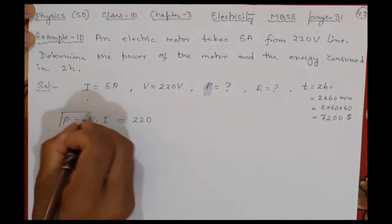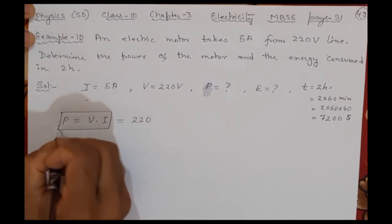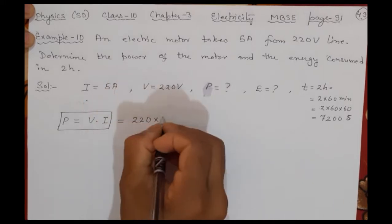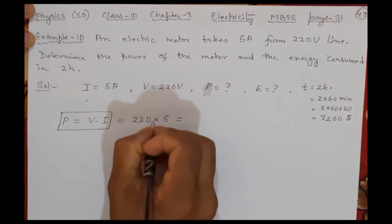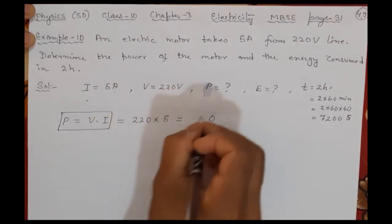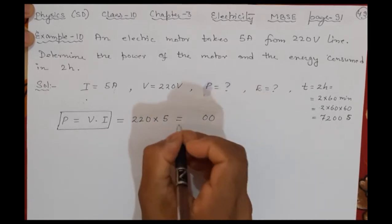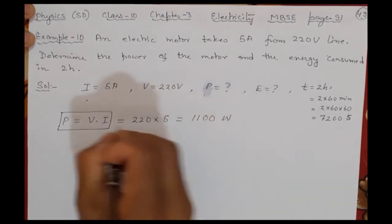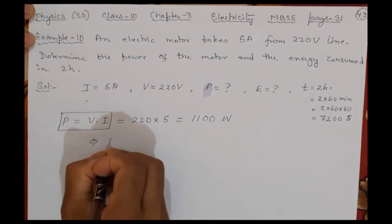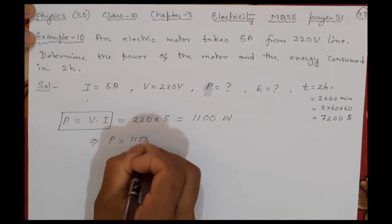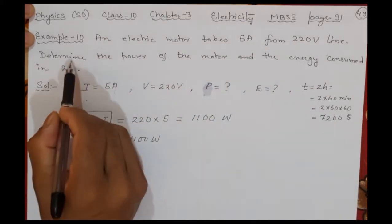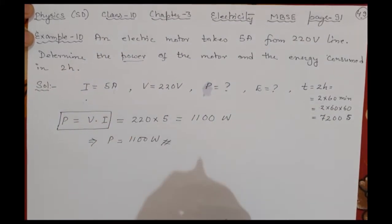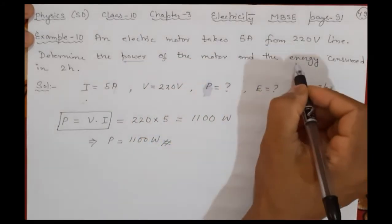220. This is the formula used - as usual, most of the time this power formula will be used. Into current is 5. Multiply them: 5 × 0 is 0, 5 × 2 is 10, 1 remains, 5 × 2 is 10, so 1100. What is your power? So the first answer I got: P = 1100W. When in exams you determine the power, this carries some marks, so highlight it like this.